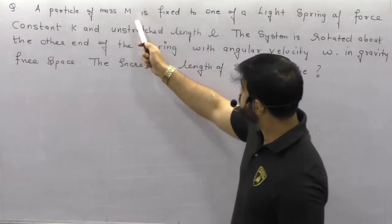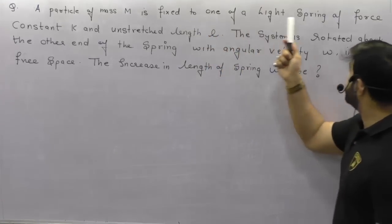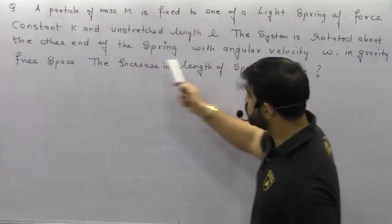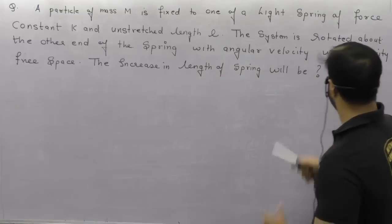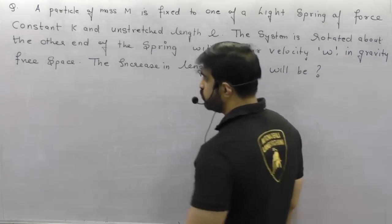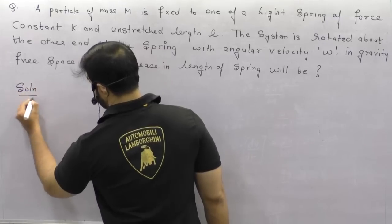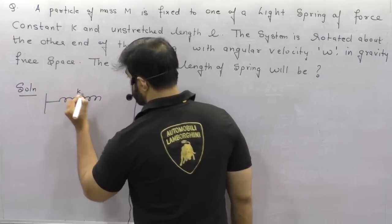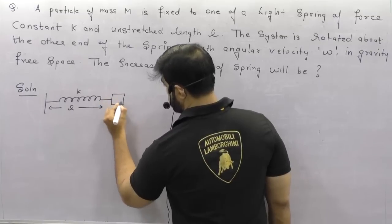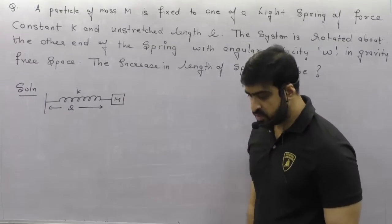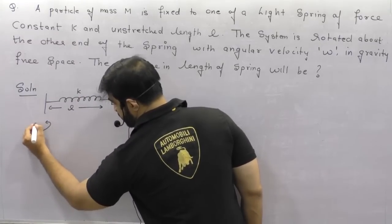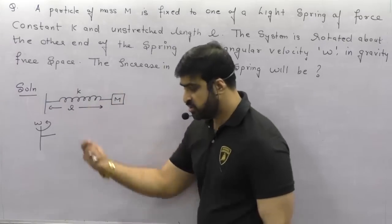Next question: a particle of mass M is fixed to one end of a light spring of force constant K and unstretched length L. The system is rotated about the other end of the spring with angular velocity omega in gravity-free space. The increase in length of the spring will be? The spring of force constant K and unstretched length L has a mass attached; when rotated with angular speed omega, the spring expands.